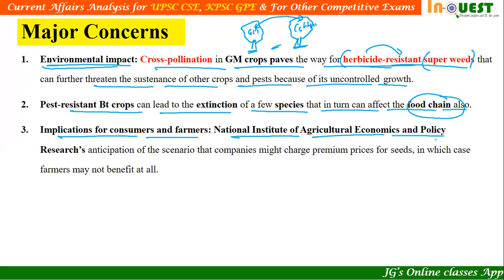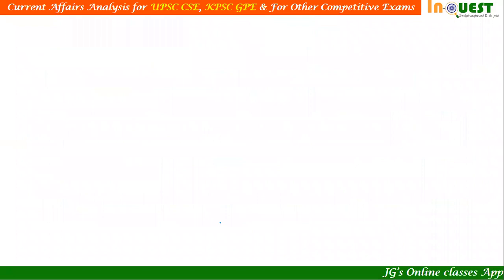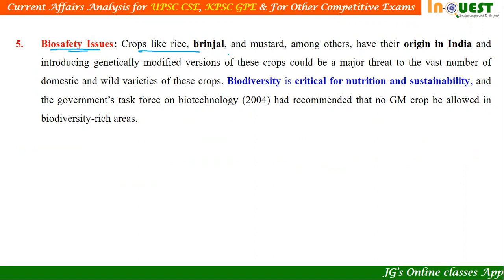Second challenge — implications for consumers and farmers: the National Institute of Agricultural Economics and Policy Research anticipates that companies might charge premium prices for seeds, in which case farmers may not benefit at all. Also, patent laws give developers of GM crops a dangerous degree of control and dominance over the food supply, resulting in over-domination of world food production by a few companies.